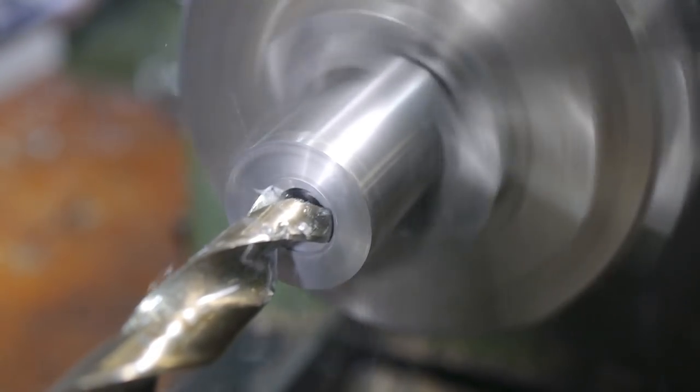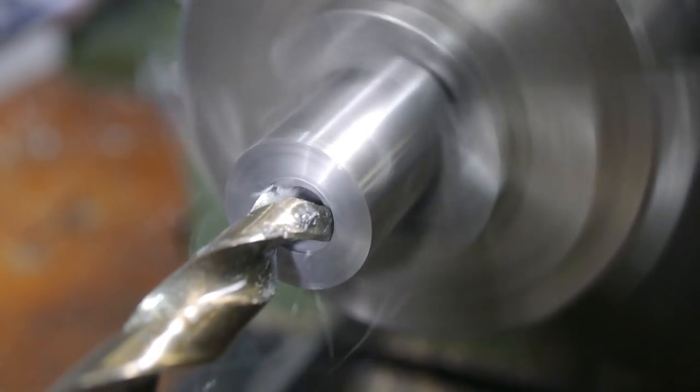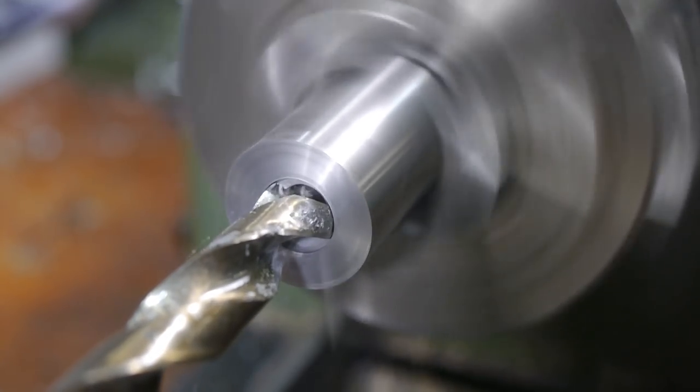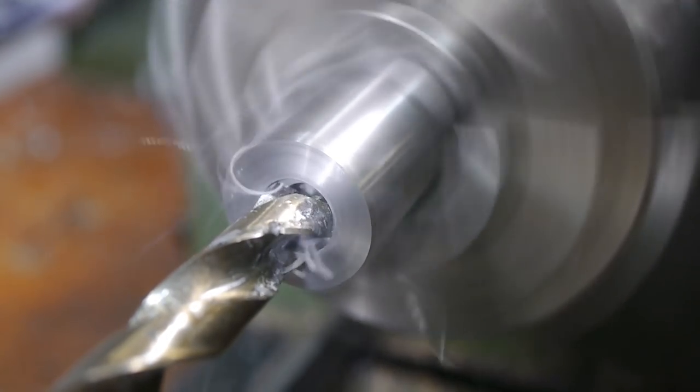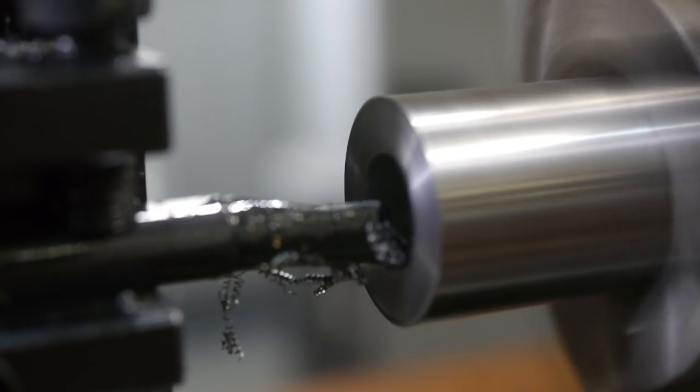I drilled the stock out to 10mm, then used a boring bar to cut the bearing seat. The wheels are 1.5mm thicker than the bearing, so this leaves a 1.5mm wall for the bearings to sit against.